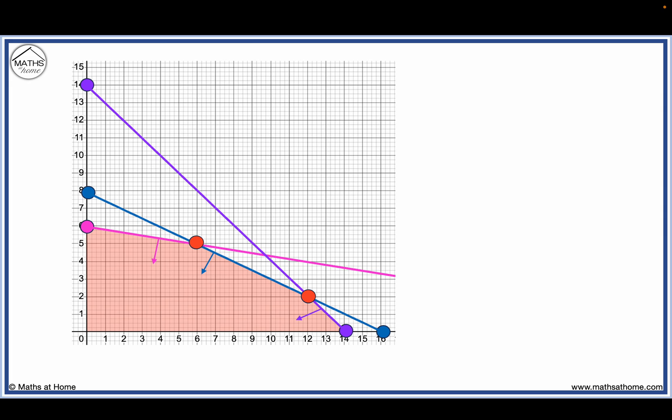Now we also look at all other solutions found on the line between these two points. Since these are the numbers of cars being produced, we must look only for coordinates between the points that have whole number values of x and y, since we cannot make a decimal amount of a car.